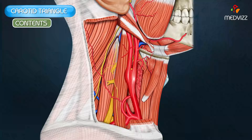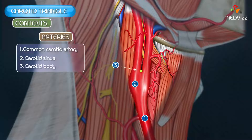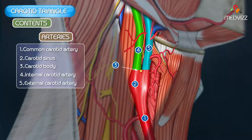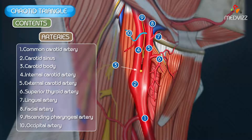The carotid triangle is extremely important for its neurovascular structures. Regarding arteries, the common carotid artery with the carotid sinus and carotid body at its termination is a key structure. The bifurcation of the common carotid artery into the internal and external carotid arteries is also visible here. Branches of the external carotid artery seen in this triangle include the superior thyroid artery, lingual artery, facial artery, ascending pharyngeal artery, and occipital artery.